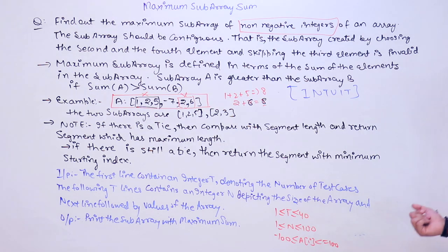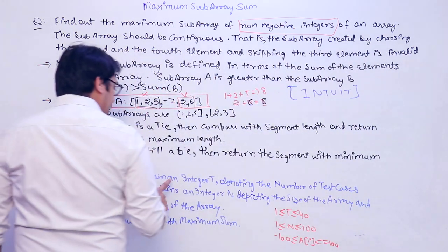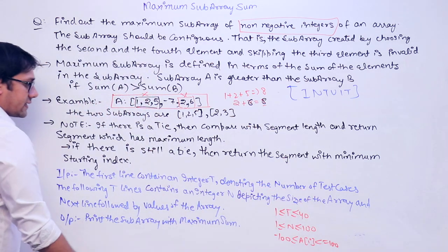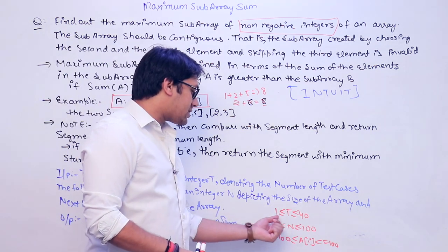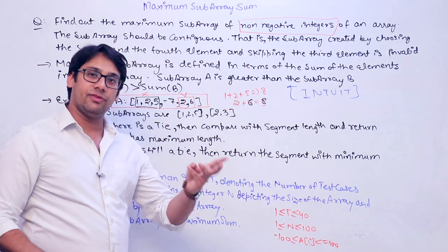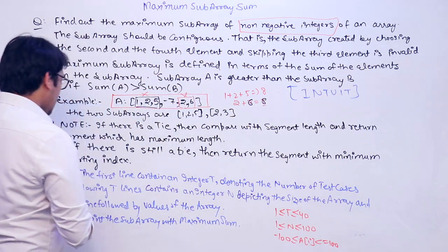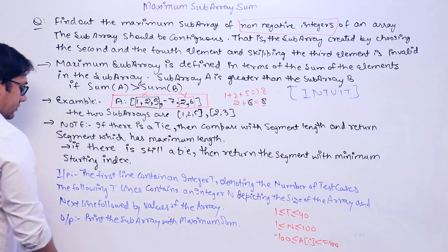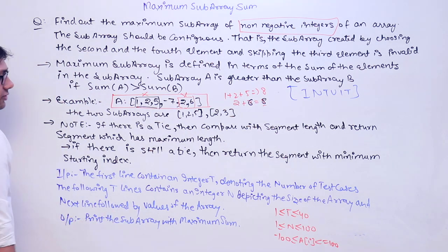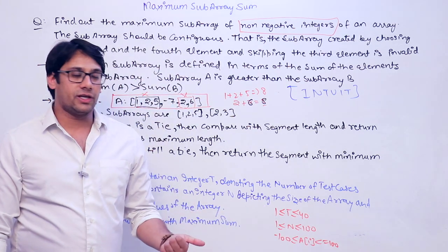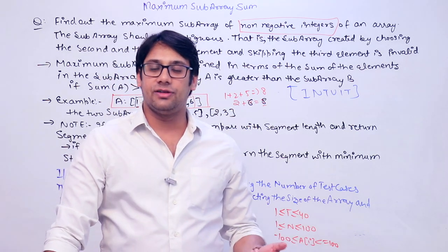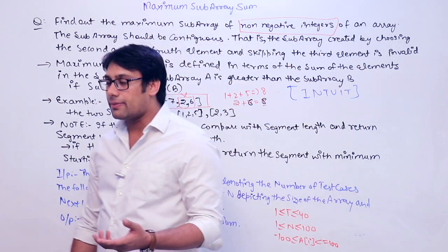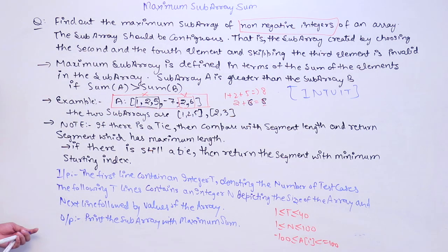The input format is as follows: the first line contains integer T denoting the number of test cases, with a maximum of 40 test cases. The following T lines each contain integer N depicting the size of the array, followed by the array values. The size of the array cannot be greater than 100, so we can pre-define an array of maximum size 100 in the program. The output should print the subarray and its maximum sum.